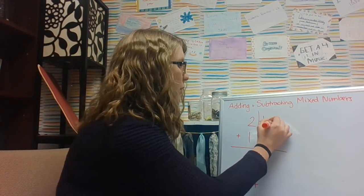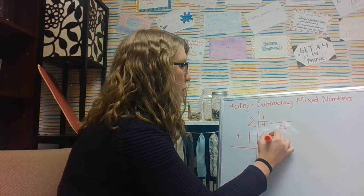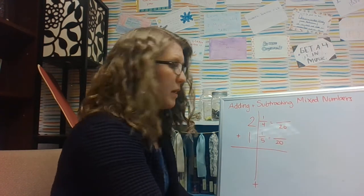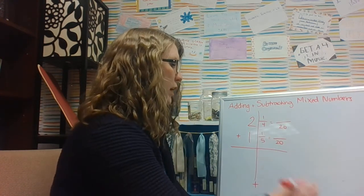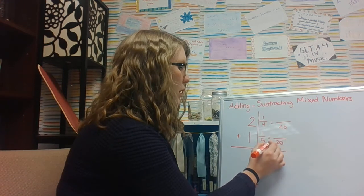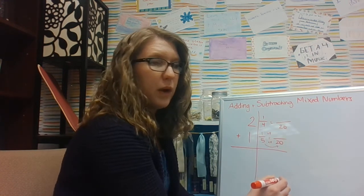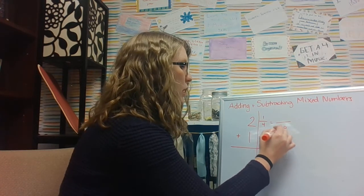So if I have 1/4 plus 1/5, I'm gonna go ahead and use 20ths because 4 times 5 equals 20. So to get from 5 to 20, I multiply by 4. If I do something to my denominator, I have to do it to my numerator. Then 1 times 4 is 4.